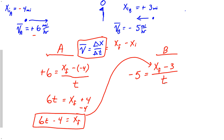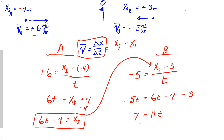Now I'll take that expression and substitute it into the runner B equation. Multiplying both sides by t gives: negative 5t equals (6t minus four) minus three. Getting all the t terms on one side: negative 5t equals 6t minus seven, which rearranges to seven equals eleven t, so t equals seven elevenths of an hour.